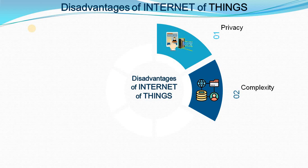The next disadvantage is complexity. The designing, developing, maintaining, and enabling of large technology in an IoT system is very complicated. It is not an easy task to build these IoT systems. There has to be an integration of a lot of things, which is quite complex. So these are the two disadvantages of IoT.